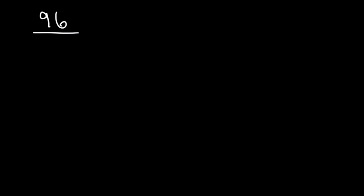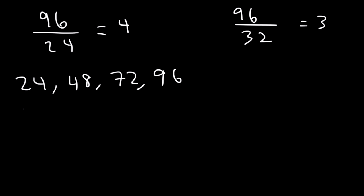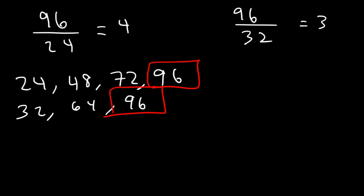Let's prove it by making a list, and also by dividing: 96 divided by 24 gives us 4, and 96 divided by 32 gives us 3 — both whole numbers, confirming 96 is a common multiple. Multiples of 24 are 24, 48, 72, and 96. Multiples of 32 are 32, 64, and 96. As you can see, 96 is indeed the LCM between 24 and 32.